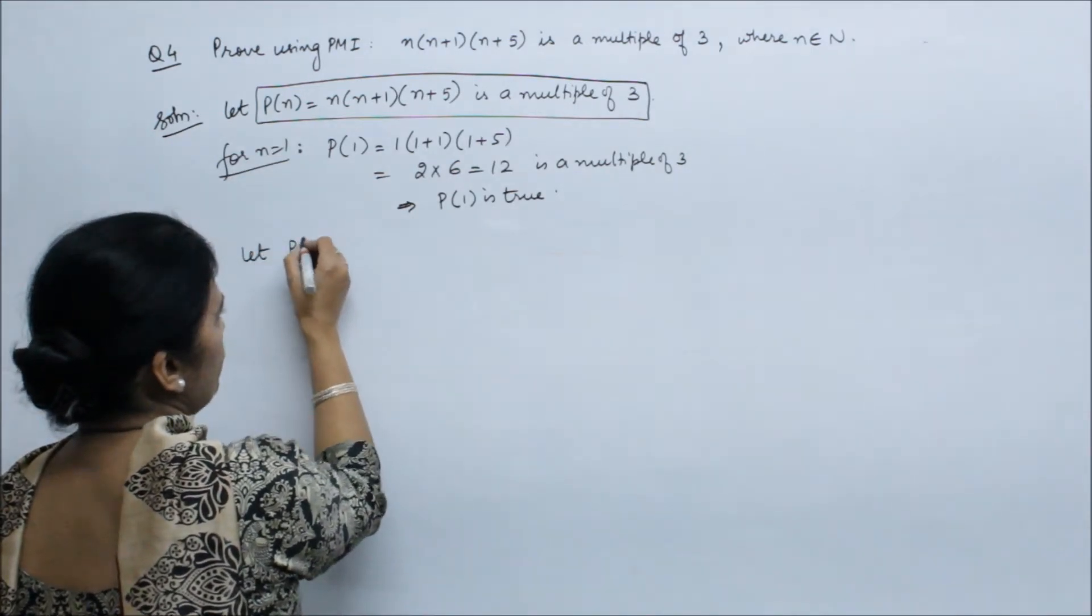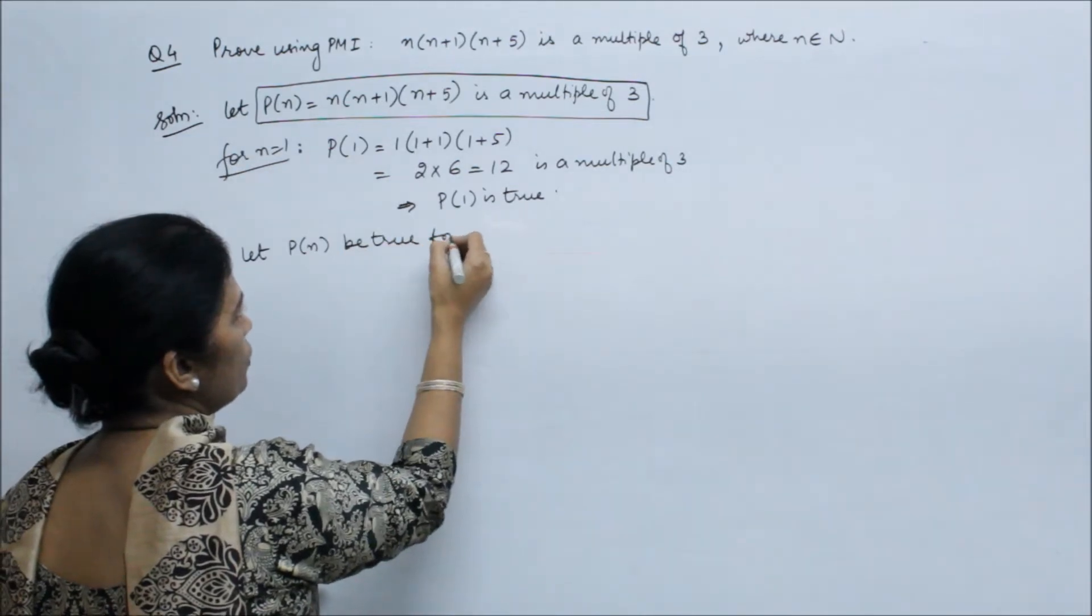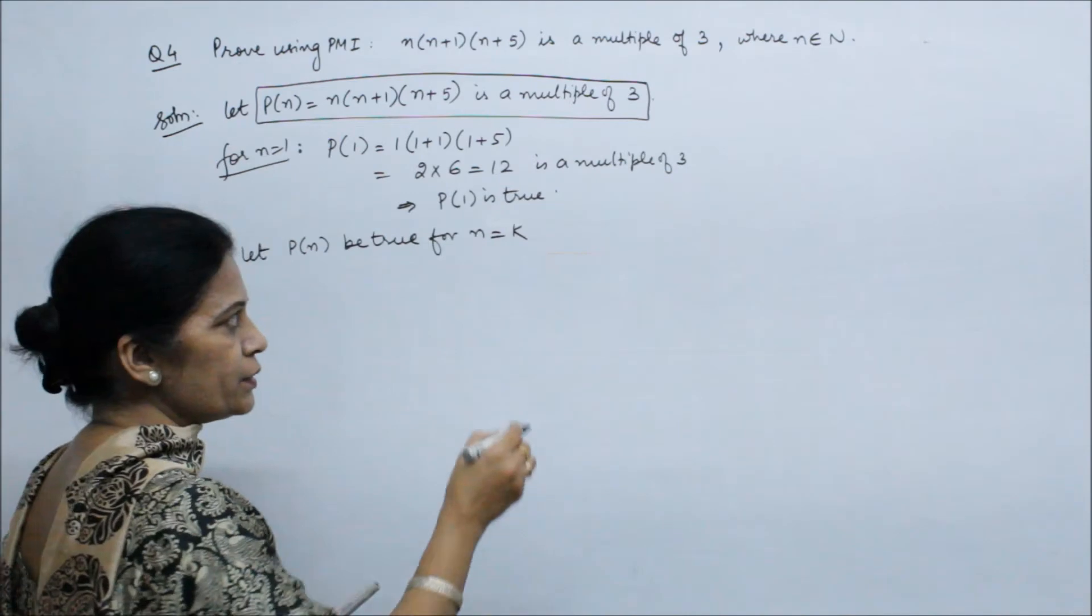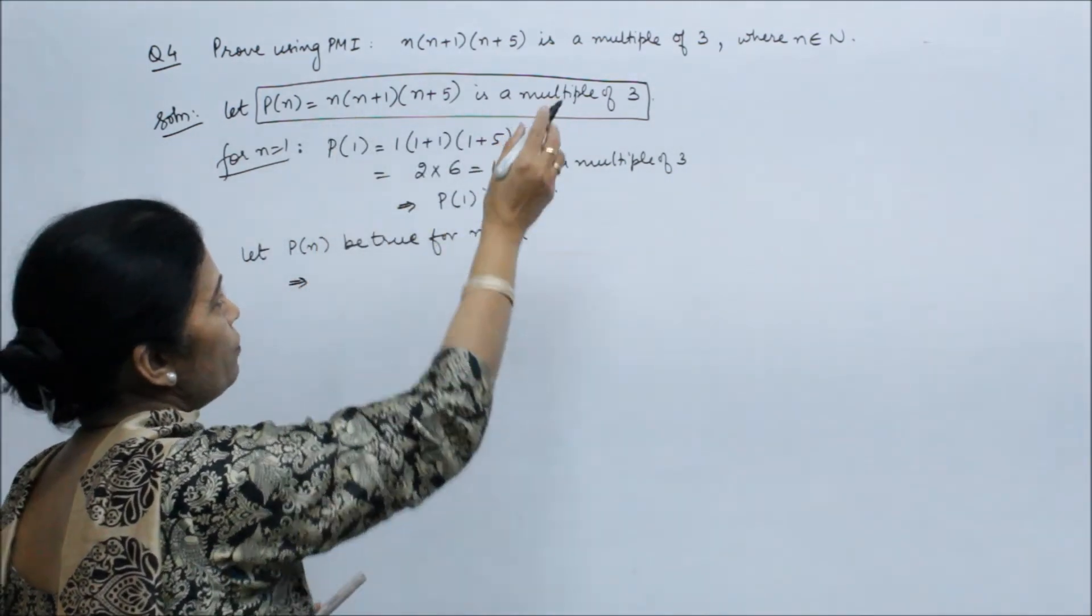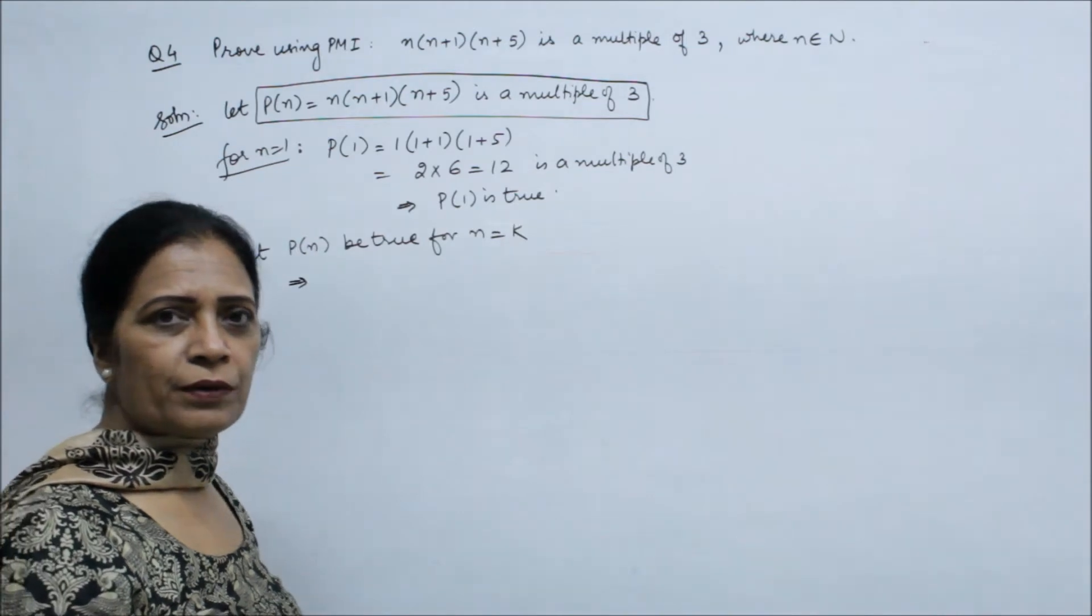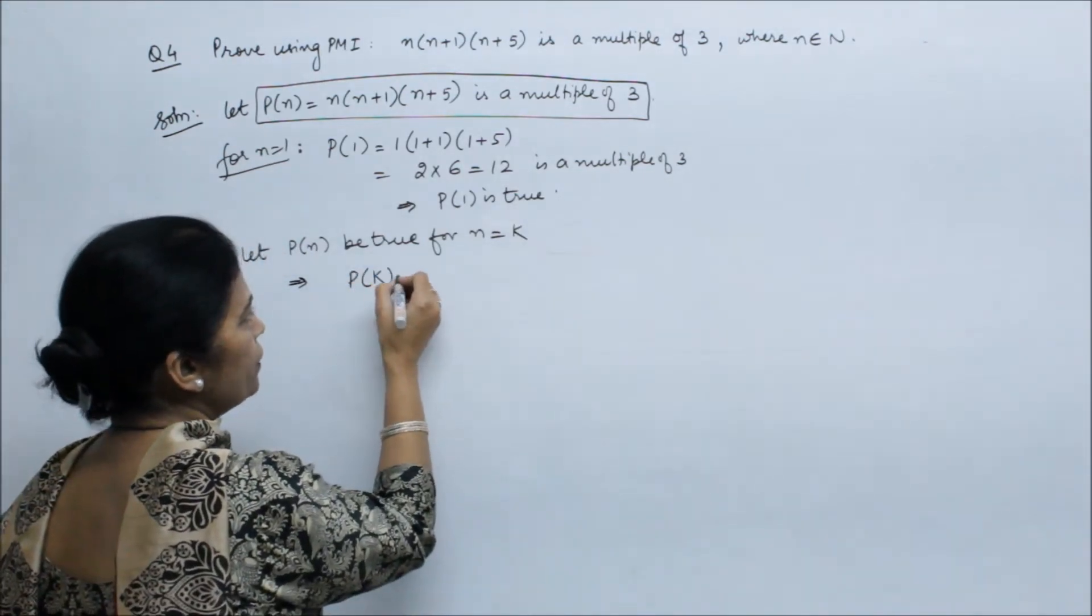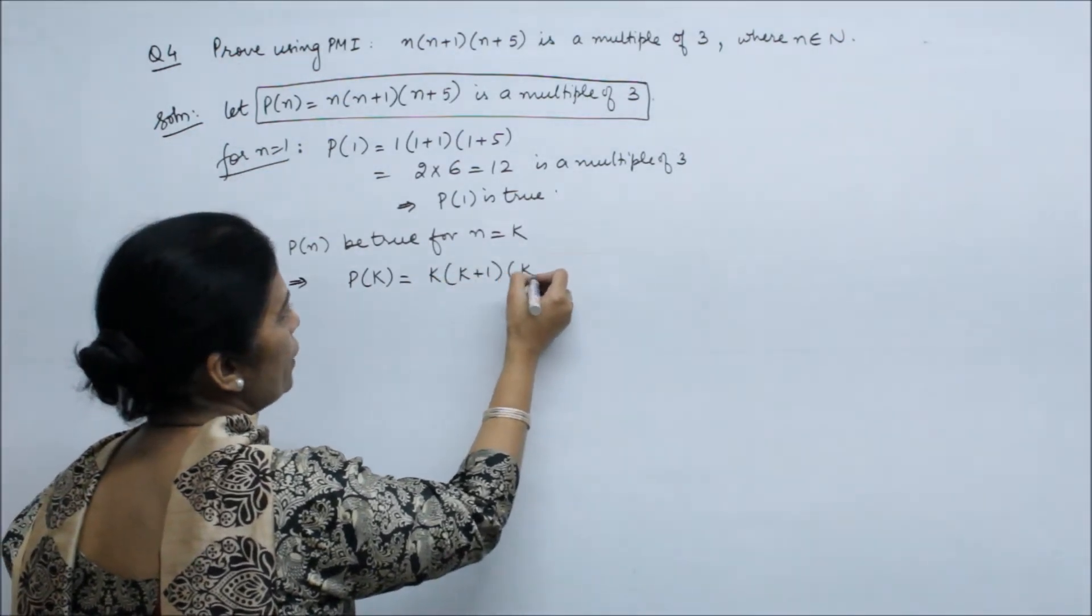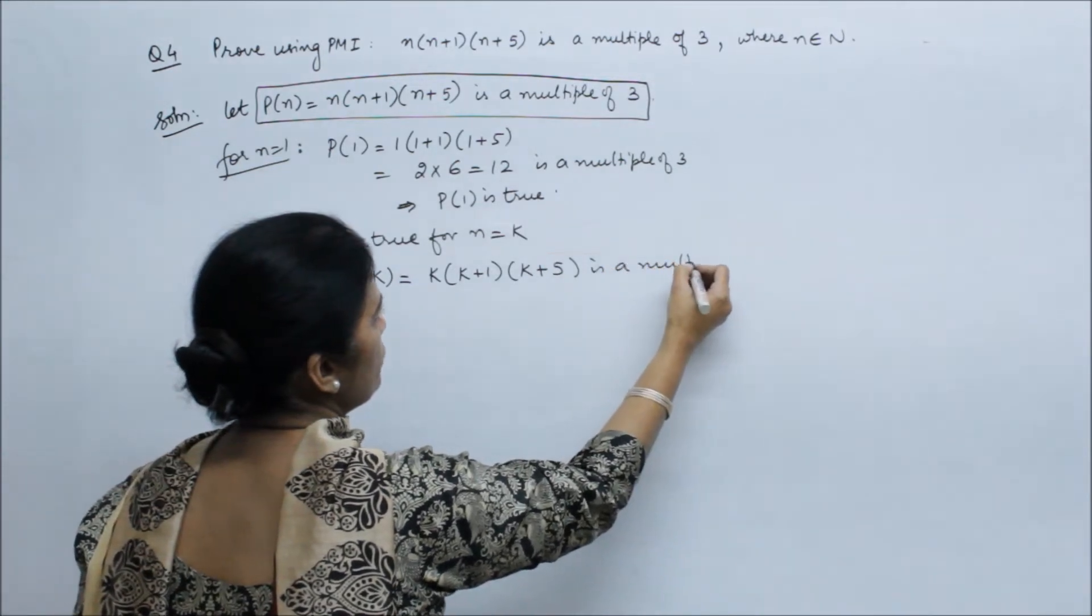Then let P(n) be true for n is equal to k. We have to assume that, this is an assumption step. We have to assume that P(k) is equal to k into k plus 1 into k plus 5 is a multiple of 3.